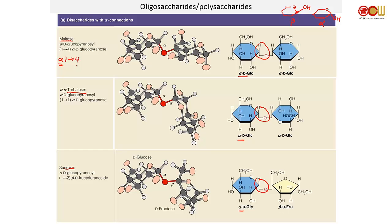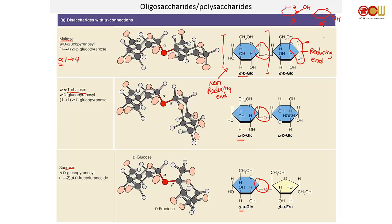The non-reducing end is on one side, and the other end will be a non-reducing end because that particular monomer of sugar no longer has the aldehyde. It's non-reducing, whereas the monomer on the right still has the aldehyde — because if you break it apart, it's going to give you an aldehyde. That's why it's reducing.